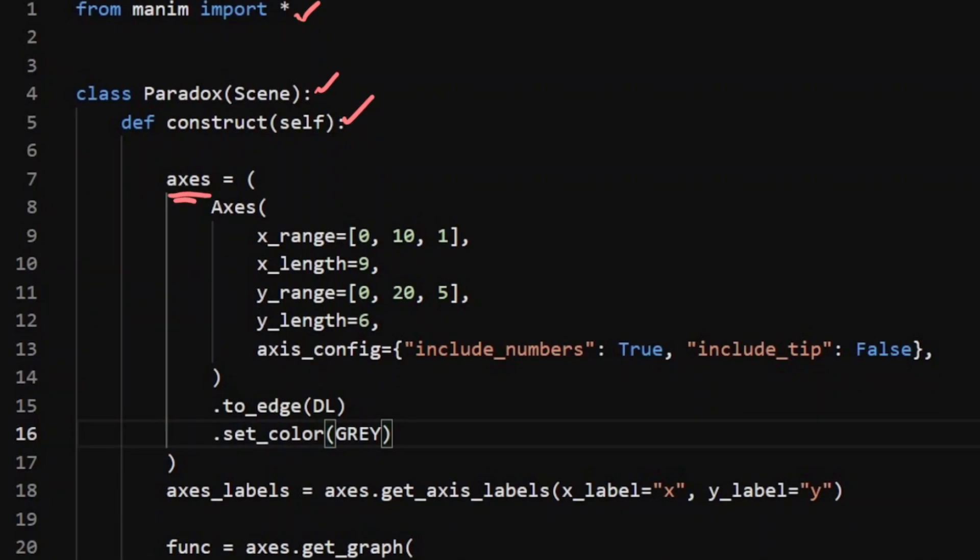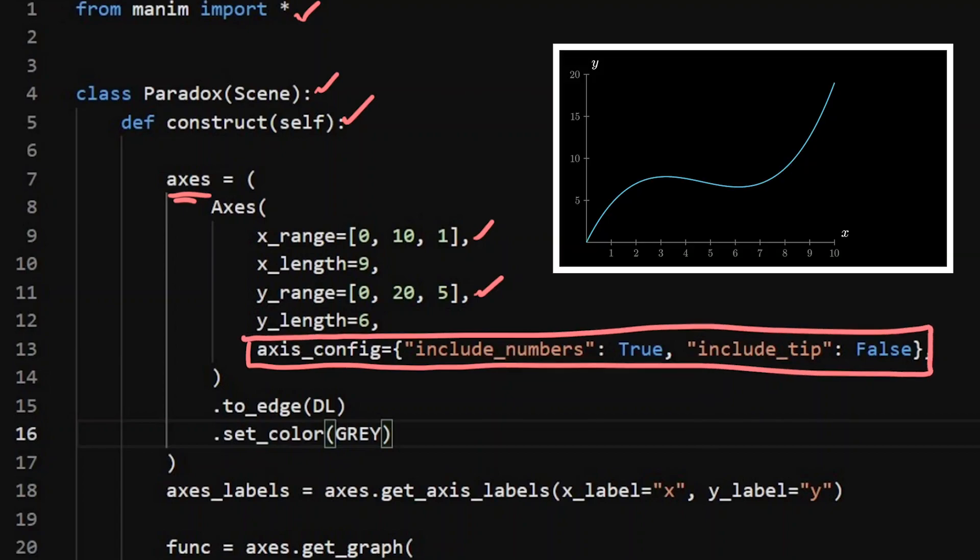We've got to get an axis on. I've got an x_range, I've got a y_range, I'm just going to give them length so I know where exactly they're fitting on the screen. And just a little bit of a config here if I want to change some stuff about the number lines that form the axis itself. I want to include the numbers, I want that to be true, but I don't want there to be tips. So include_tip, that one's going to be false.